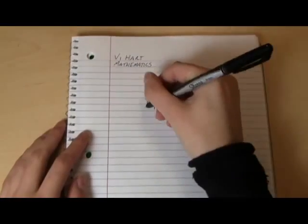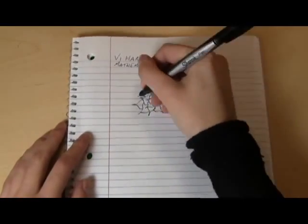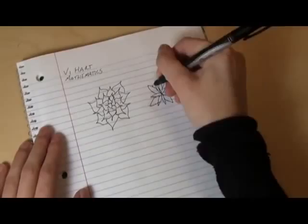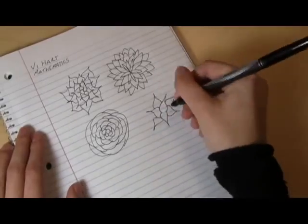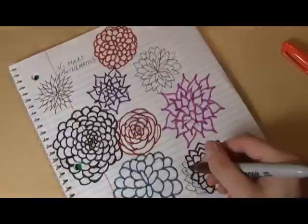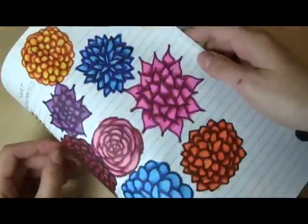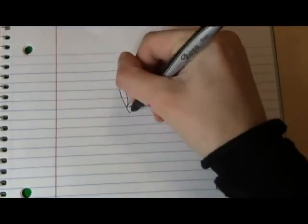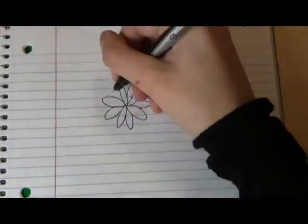Say you're me and you're in math class and you're doodling flowery petal-y things. If you want something with lots of overlapping petals, you're probably following a loose sort of rule that goes something like this: add new petals where there's gaps between old petals. You can try doing this precisely. Start with some number of petals, say five, then add another layer in between.